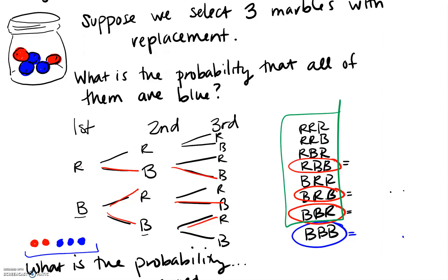Every probability is going to be based on that two-to-three ratio. If we want to find the probability that all of them are blue, we're still looking at the same outcome. First one being blue is three-fifths. Second one being blue: still three-fifths — we haven't changed the number. And the third one being blue: also three-fifths. With replacement should only make this question easier because you don't have to think about how the numerator and denominator are changing. All blue is just the probability of blue raised to however many blues you needed — in this case, to the third power.